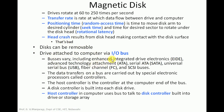Disk drives are attached to the computer with the help of input/output buses. There are different types of IO buses: EID (Enhanced Integrated Drive Electronics), and in modern magnetic disks we use ATA (Advanced Technology Attachment) and SATA (Serial ATA). Nowadays we also use USB (Universal Serial Bus), fiber channel (FC), and SCSI buses. Data transfers on a bus are carried out by a specific electronic processor called a controller. There is a controller present on the disk that takes care of data transfer over the buses.